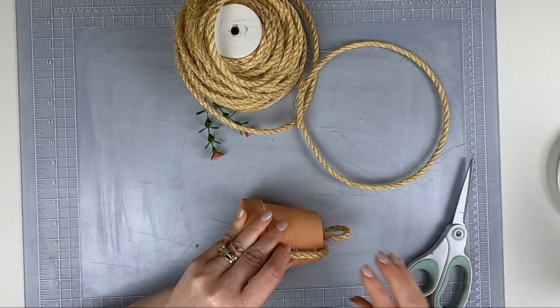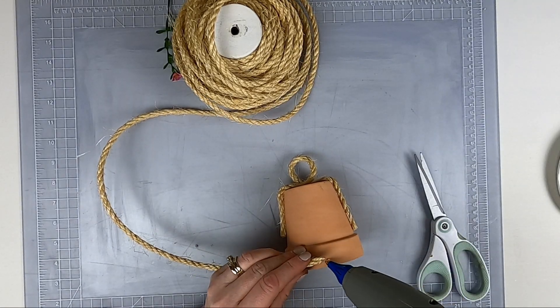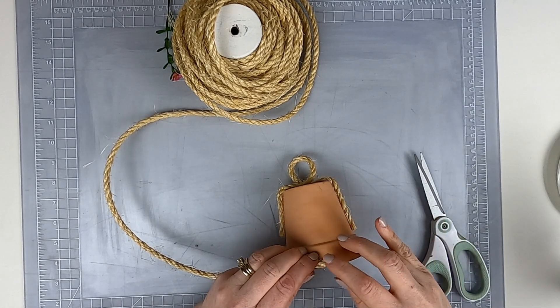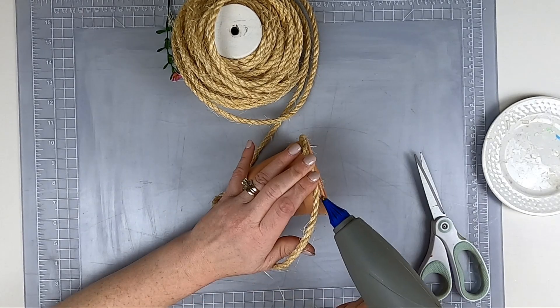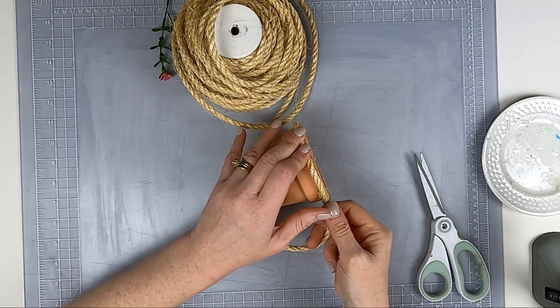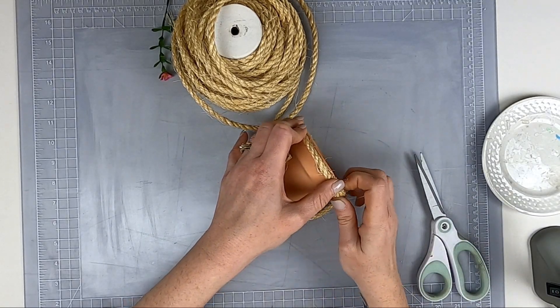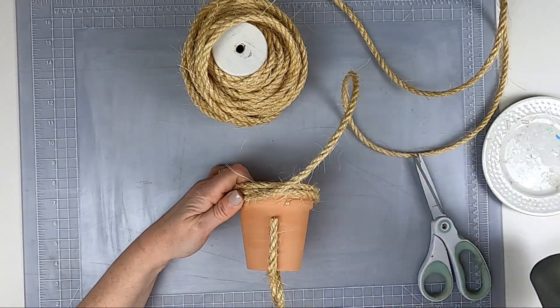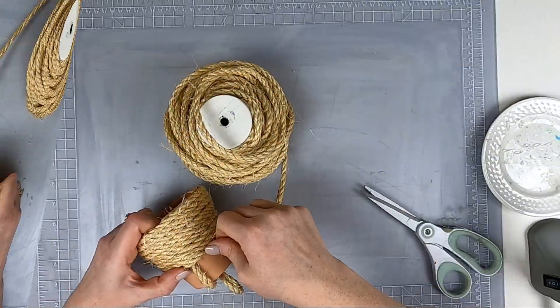I'm just gonna start at the bottom and I'm hot gluing around the edge. I don't hot glue the entire thing, but I do hot glue the first row and then I just start wrapping and gluing sporadically, wrapping very very tight.